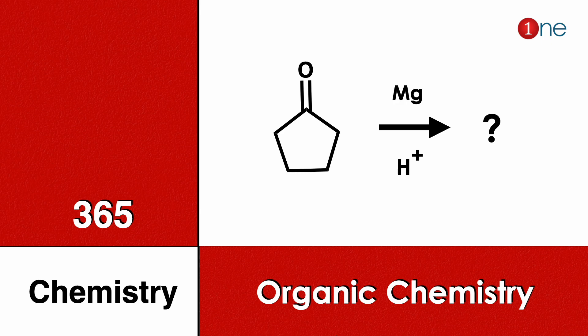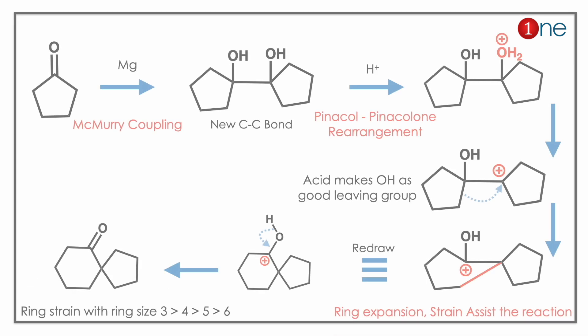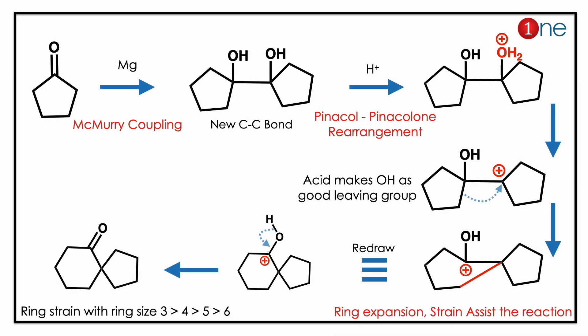Welcome to One Chemistry. This is the 365 Chemistry Series — organic chemistry questions for you. Here you have cyclopentanone, magnesium, and acidic conditions. You should find what will be the final product. Here you have a carbonyl and magnesium condition.